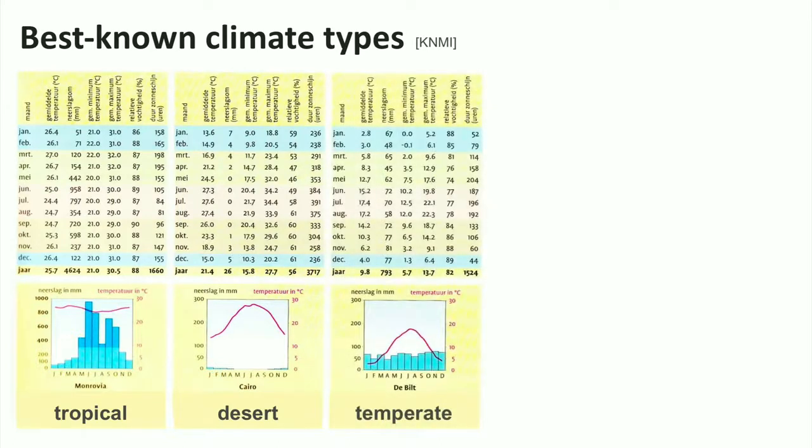Here we see the temperate climate, such as in the Netherlands. Relatively cool temperatures, not too much difference between summer and winter, and precipitation all year round, but not as much as in a tropical climate.